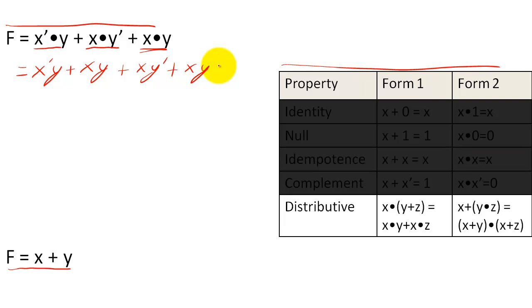Next, I want to use distribution because now that I have these common literals, I am going to do two distributive properties. And I am going to have x prime or x ANDed with y. I am pulling out the AND and the y. Or, I am going to pull out this x here. So I am going to have x, y prime or y.